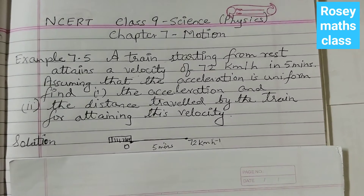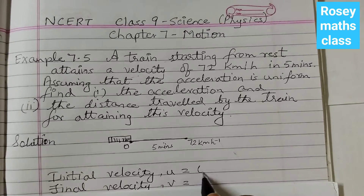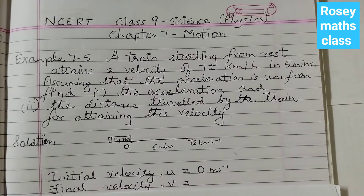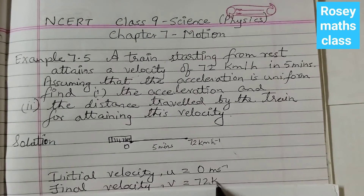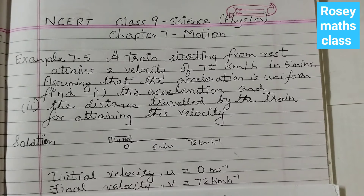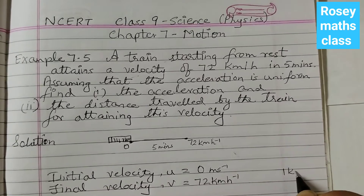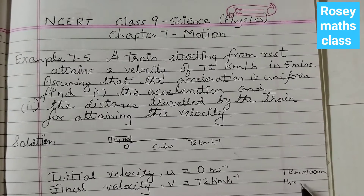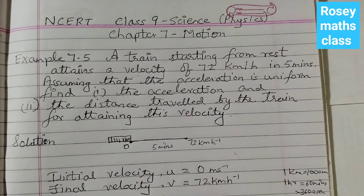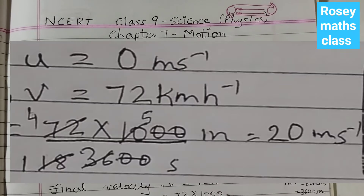Let's find out the acceleration first. Initial velocity is 0 meters per second. Final velocity is 72 km per hour. Whenever it's given in kilometers per hour we need to convert it to meters per second. We know that 1 kilometer equals 1000 meters and 1 hour equals 3600 seconds. So we multiply by 1000 and divide by 3600.